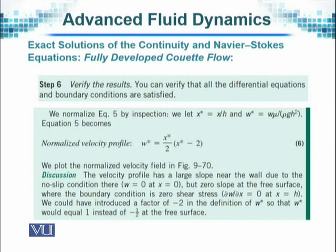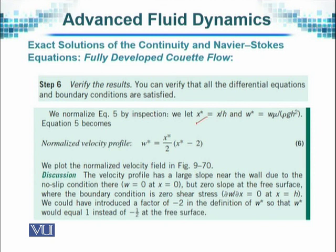We verify these results and now come to the normalization, the last part of this question. We proceed as we did before in the previous question — it is a similar exercise. For any length, we find the non-dimensional value of x by dividing it by some standard length in the problem. The standard length we observe is h, the width of the film. Dividing x by h gives a normalized x*, which is dimensionless because it is simply a ratio with no dimension.